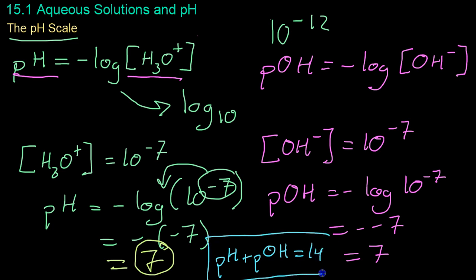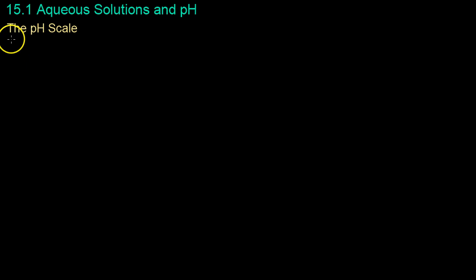You'll see that the pH and pOH will always sum to 14. In the case of neutral water, they're split directly in half into 7 and 7.